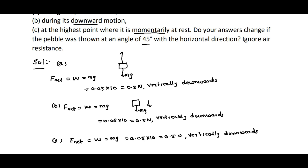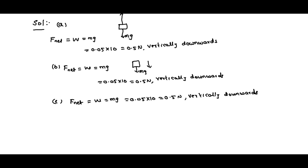Do your answers change if the pebble was thrown at an angle of 45 degrees with the horizontal direction? The answer is no. The above answers won't change even if the pebble is thrown at 45 degrees, because the horizontal component of velocity, u cosθ, remains constant. Thank you.